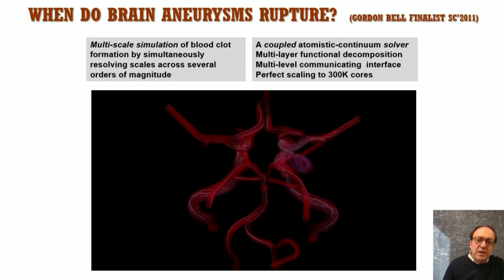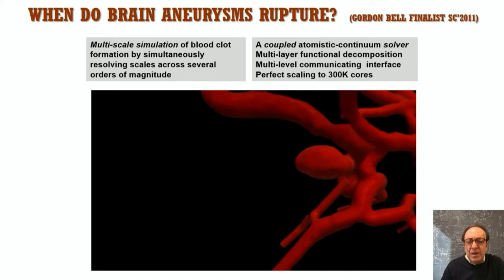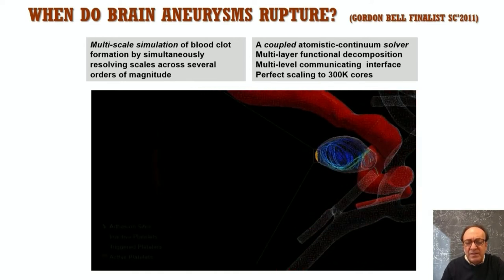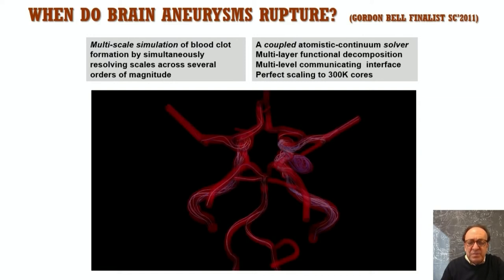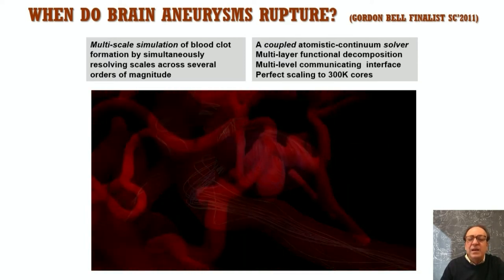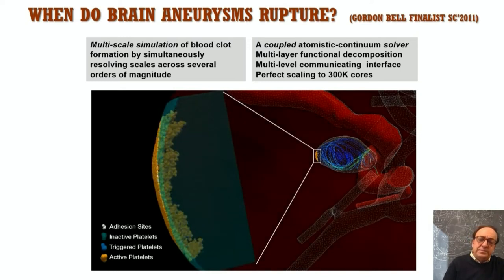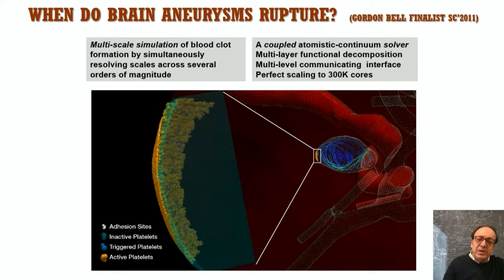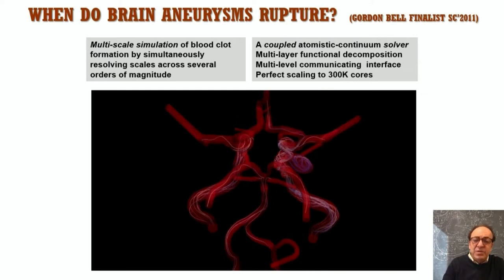A few years ago, talking about supercomputing, we attempted to simulate aneurysms as you can see here. We were part of the Gordon Bell competition more than 10 years ago. We did a multi-scale simulation where we had the whole brain vasculature, while at the same time focusing on the apex of the aneurysm where rupture could happen. This was a very expensive computation — 300,000 cores — and it took us a lot of time to complete. But at the end, we learned very little about the process of rupture, although this was a real geometry. Multi-scale simulations could give you many insights, but it's not something that can be done routinely.